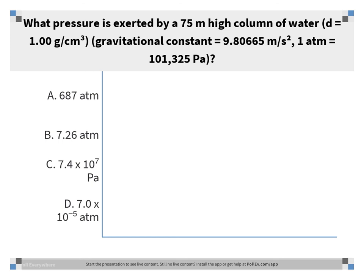This problem was done basically the same as the previous one. One difference is we don't have to change the height into meters because it's already given in meters. Another difference is that the column is filled with water instead of mercury, so the density is different — one gram per cubic centimeter. We still need to cube our conversion factor going from centimeters to meters so that cubic centimeters convert to cubic meters, so that 10 to the minus 2 gets cubed.